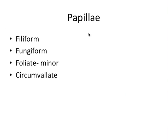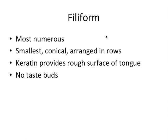The four types of papilla are filiform, fungiform, foliate — which are pretty minor — and the circumvallate. Filiform papilla are the most numerous. They're the smallest in size, mostly conical in shape, and arranged in rows. They have a thick layer of keratin that provides a rough surface to the tongue, increasing friction, and can also cause a whitish tint — like if you've ever seen the tongue of a cat with their heavy keratinization. The filiform papilla do not have taste buds in them.